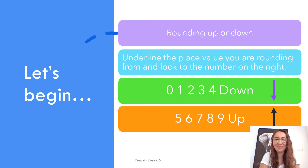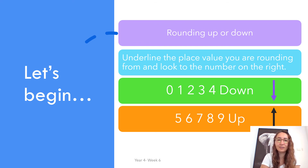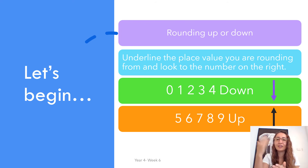Here is a little fact sheet. When we round up or round down, we underline the place value you are rounding from. Say if we're looking at the nearest 10, we would underline the tens column number, and then we look to the right. The number on the right is very important: if that number is 0, 1, 2, 3, or 4, we round down. If it is 5, 6, 7, 8, or 9, we round up to the next 10.